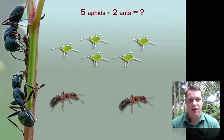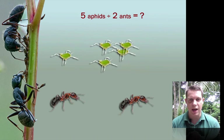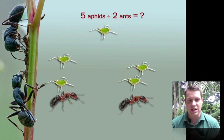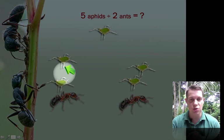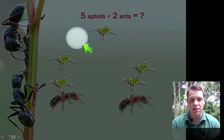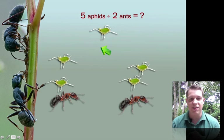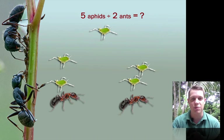Well how are we going to do that? Because 5 aphids divided between 2 ants. Let's see what happens. Well, we can put 2 aphids with this ant and 2 aphids with this ant. But we have this 1 aphid that can't go either place. Because we can't divide 2 into 5 evenly. We can't make even groups. It's impossible.